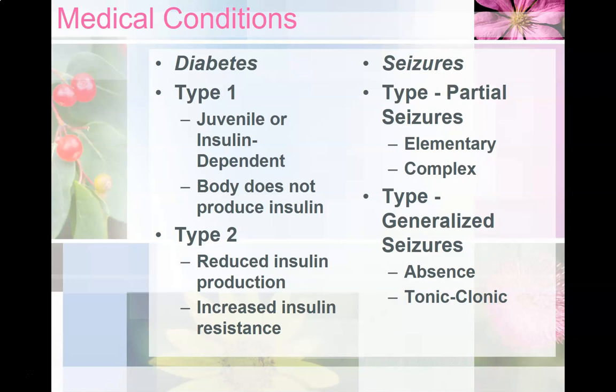Generalized seizures are characterized by a loss of consciousness. Absence seizures generally last a few seconds and usually consist of staring or rolling back of the eyes. Tonic-clonic seizures result in a person stiffening all over, with jerky movements of the arms and legs. Skin may appear bluish or pale, and they last 2-3 minutes. With medical treatment, 50% of people with epilepsy are seizure-free, and another 25-30% have fairly good seizure control. Only about 20-35% fail to achieve significant seizure control with medications.